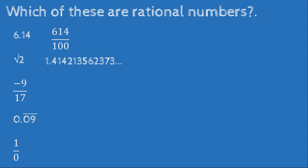The square root of 2 is 1.41421356237 — it goes on and on. Meanwhile, 0.09 continuous can be written as a fraction: 1 over 11.